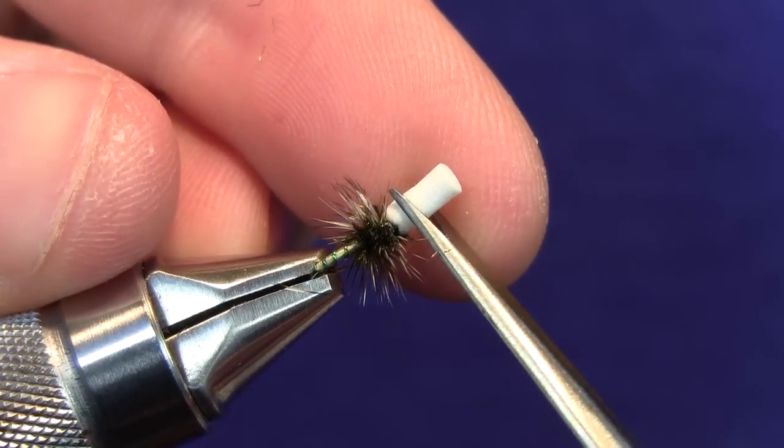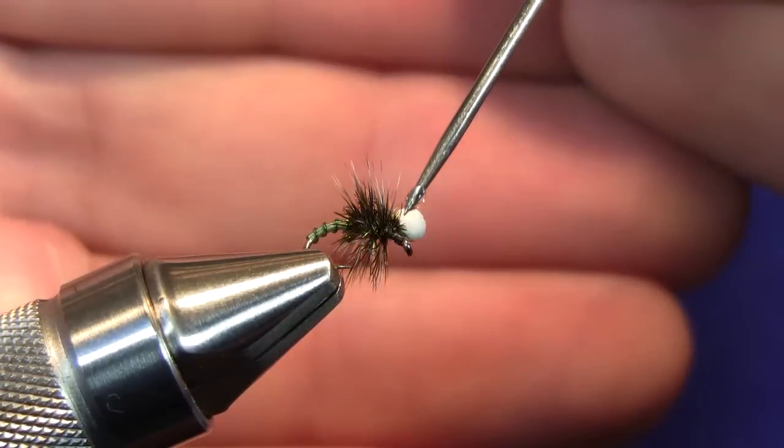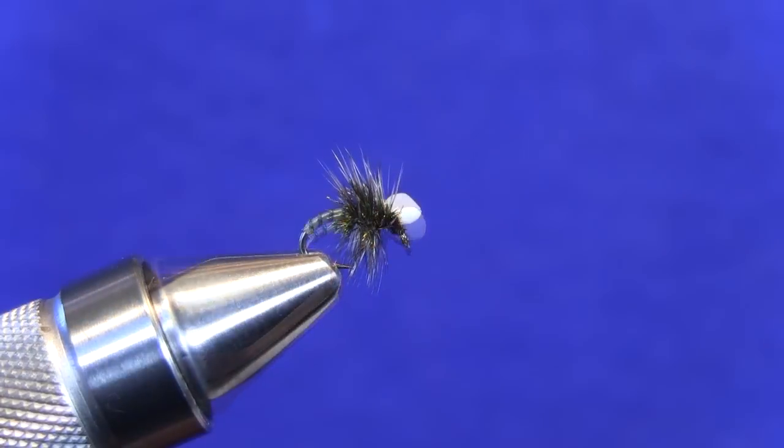At this point what I like to do is just trim that post, as you can see here, not too short, not too long. And we'll just finish the pattern out by adding a little bit of head cement just to make it a little bit more durable.